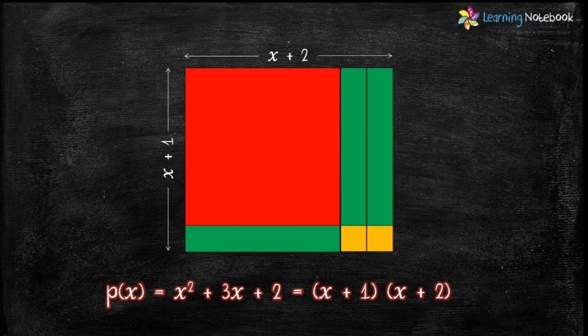Therefore by doing this activity we have got the factors of polynomial p(x) which are (x + 1) and (x + 2).